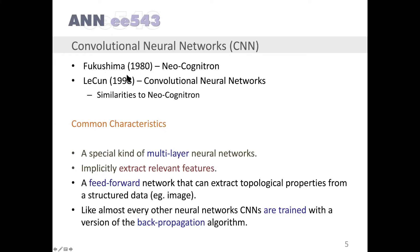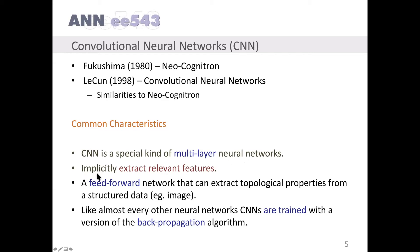Convolutional neural networks were in fact proposed by Fukushima in the 1980s as the neocognitron. The common characteristics of CNNs are: CNN is a special kind of multilayer neural network; it implicitly extracts relevant features; it is a feed-forward network that can extract topological properties from structured data, for example from images. Like almost every other neural network, CNNs are trained with a version of the backpropagation algorithm.